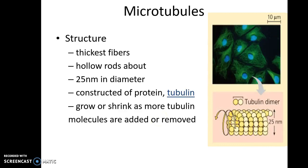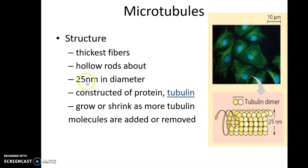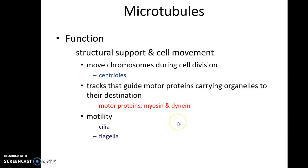The first cytoskeletal element we will study is microtubules. Here is a picture of microtubules as they appear inside the cell, and below is the structure of the protein tubulin, of which microtubules are made. Microtubules are thicker fibers — hollow rods about 25 nanometers in diameter, constructed of the protein tubulin. Tubulin can be added onto or removed from the growing chain, so these are said to be in dynamic movement.